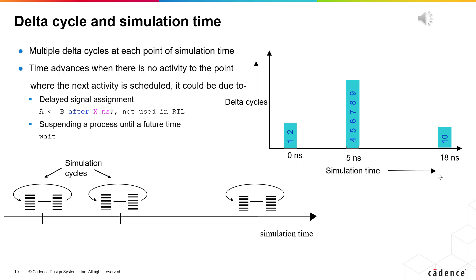In the graph on the right, we see that at simulation time 0 nanoseconds there occur two delta cycles, then simulation time proceeds to 5 nanoseconds as there is no activity from 0 to 5 nanoseconds. At 5 nanoseconds, 6 delta cycles occur, and at 18 nanoseconds there is one delta cycle. Note that delta cycles only consume simulation cycles but not simulation time.